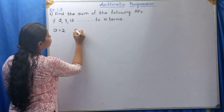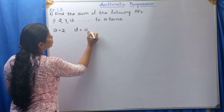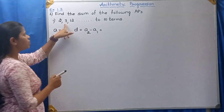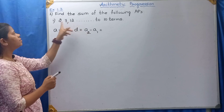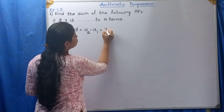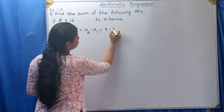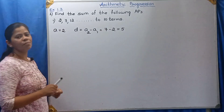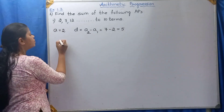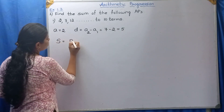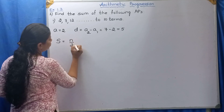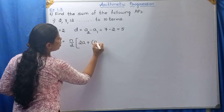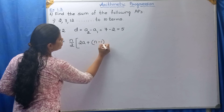D is equal to A2 minus A1. A2 is 7 and A1 is 2. So 7 minus 2 is 5. D equals 5. Now let us apply the formula: S equals n by 2, 2A plus n minus 1 into D.